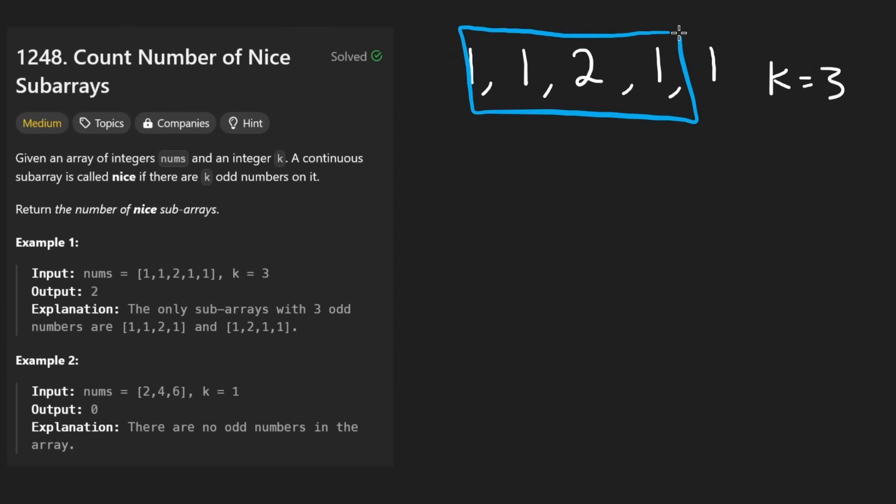For example, this subarray has three occurrences of the value one. One is an odd number, two is not an odd number, therefore this subarray has three odd numbers, it counts. This one does not count, it only has two odd numbers.